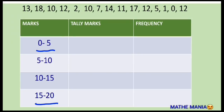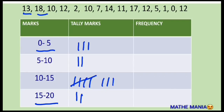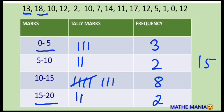Starting the same way as earlier, we read the values and put tally marks — 13 is in the interval 10 to 15, 18 is in the interval 15 to 20, and so on. The frequencies of the various classes come out to be 3, 2, 8, and 2. Another thing to check in both kinds of tables is that the sum of all frequencies should always equal the total number of observations. In this example there were 15 observations, and 3 plus 2 plus 8 plus 2 equals 15.